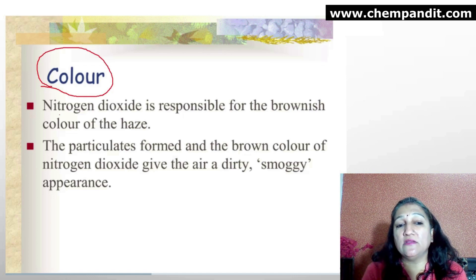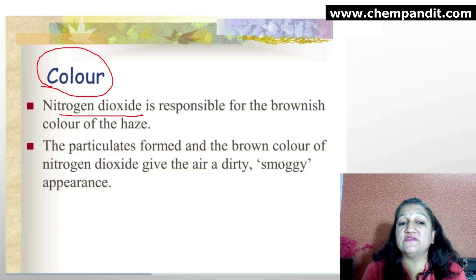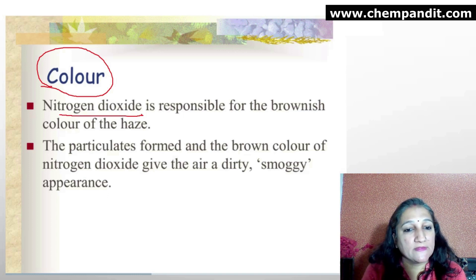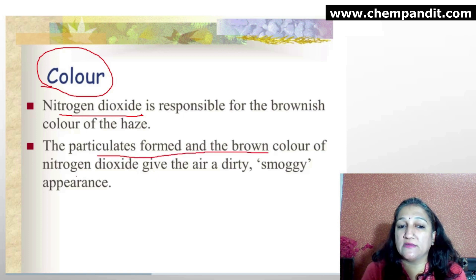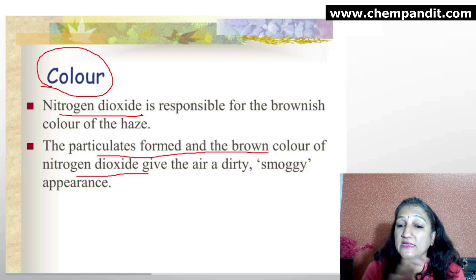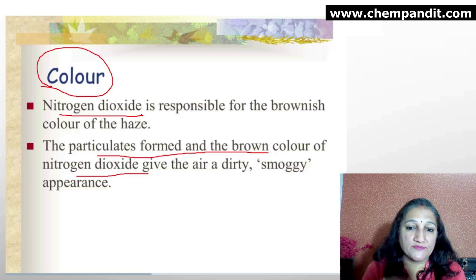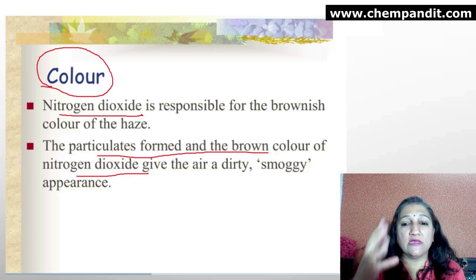The smog has a brownish color. Why? Nitrogen dioxide is a brown-colored gas, and brown-colored particulates together give a dirty, smoggy appearance. This is why photochemical smog appears brown.